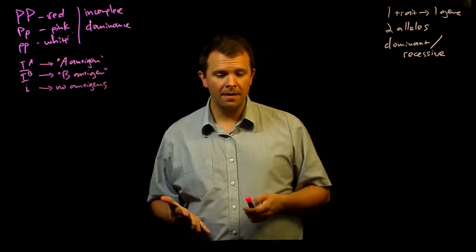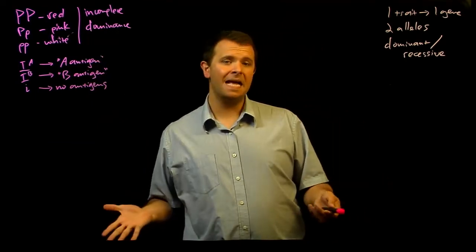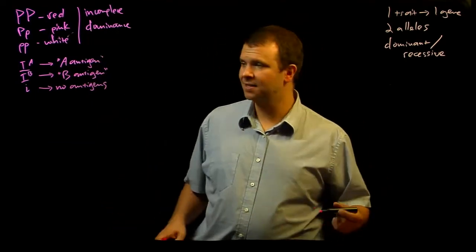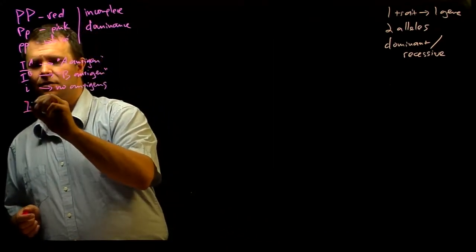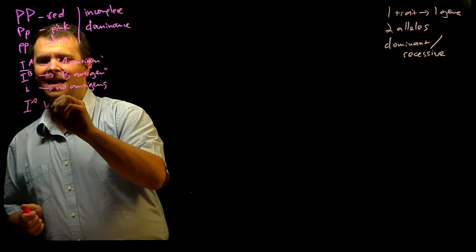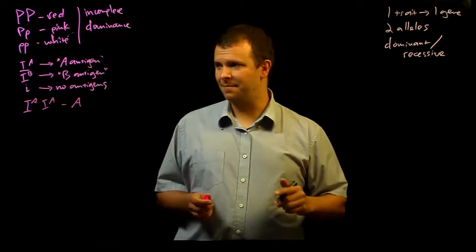And now that we know something about the molecular biology of this setup, we can see how these alleles interact. And the homozygotes are easy. If you're homozygous IA, IA, then you're going to have type A blood.